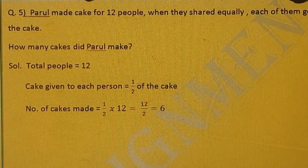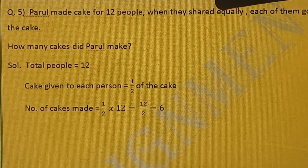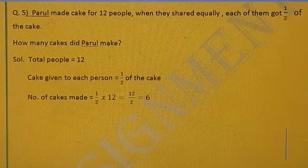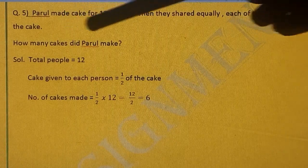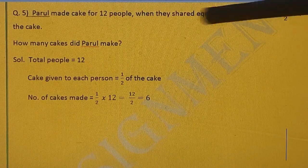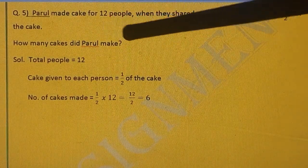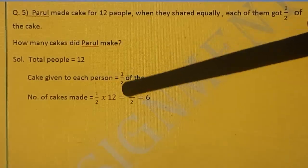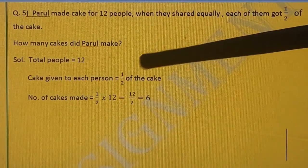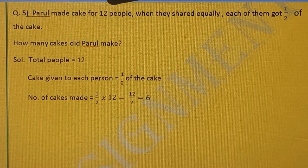Question number 5. Parul made cake for 12 people. When they shared equally each of them got 1 upon 2 of the cake. How many cakes did Parul make? Total people were there? 12. And how many cakes made? 1 by 2 of the cake. So number of cakes made, 1 by 2 multiply by how many were there people? 12.